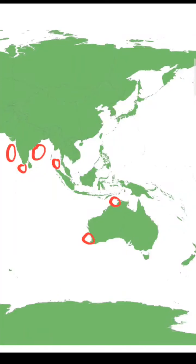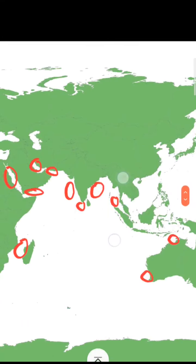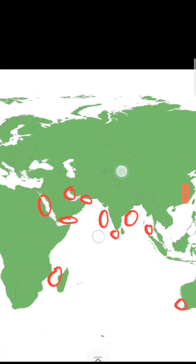Let me show you seas in Indian Ocean. First one here is Timur Sea. Next we have Andaman Sea, Bay of Bengal, Lakshadweep Sea, Arabian Sea.